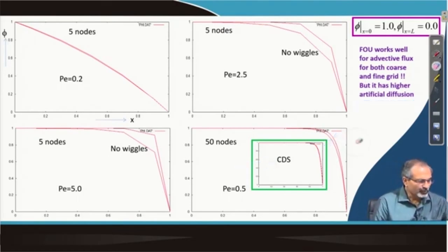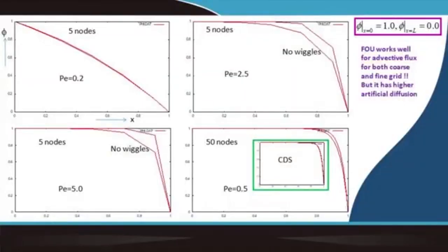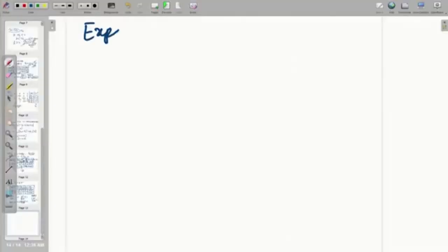We have now gone through two different schemes for the one-dimensional advection-diffusion equation. Recalling the earlier discussion of the exact solution — which comes out in the form of exponentials — the question is whether we can explore a scheme that actually uses that exponential distribution. This is expected to give much superior match with the exact solution, at least in the one-dimensional case. That is the motivation for discussing the exponential scheme.